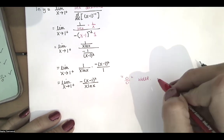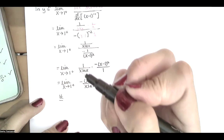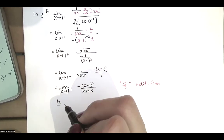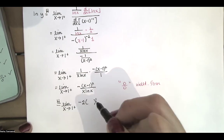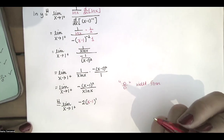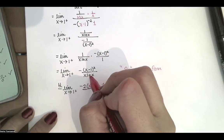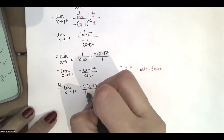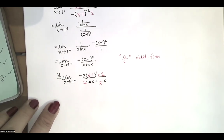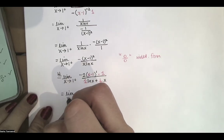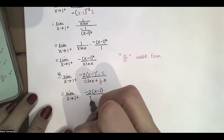So we'll use L'Hôpital's rule again. Taking the derivative of the numerator: that's negative 2 times the inside function x minus 1 to the first power, multiplied by the derivative of the inside, which is just 1. For the denominator, we use the product rule: the derivative of the first times the second, plus the derivative of the second times the first. The derivative of the first factor is 1, and the derivative of natural log of x is 1 over x.